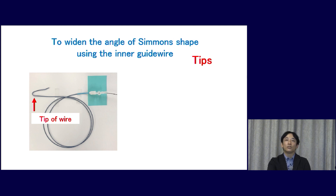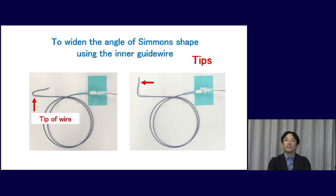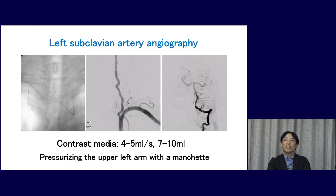When the tip of the wire is retracted, the head of the catheter is closed. On the other hand, when the tip is advanced, the head of the catheter turns open. As mentioned earlier, a half-locking technique is useful to fix the positioning of the wire inside the catheter. For the left subclavian artery angiogram using a mechanical auto-injector, contrast media is injected at a rate of 4 to 5 ml per second with a volume of 7 to 10 ml. While injecting the contrast, the patient's left arm is tightened with a blood pressure cuff to get better intracranial images.